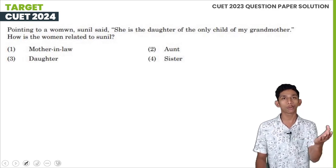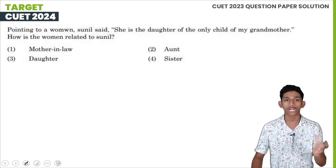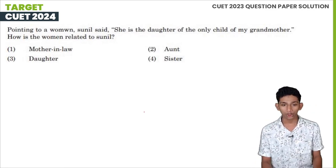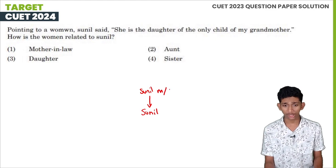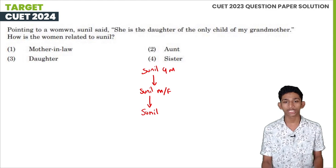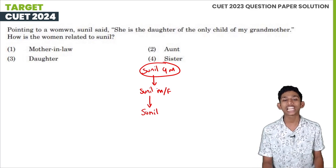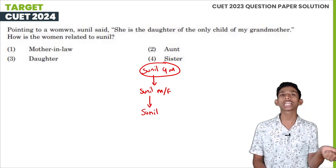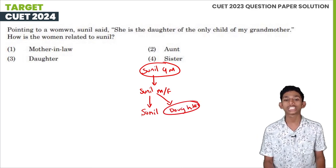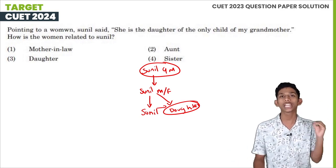Pointing to a woman, Sunil said, 'She is the daughter of the only child of my grandmother.' What is Sunil's relation? Sunil's grandmother has only one child — Sunil's mother or father. If Sunil's grandmother's only child is Sunil's mother, then her daughter would be Sunil's sister.